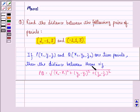then the distance between them, that is PQ is given by square root of x2 minus x1 the whole square, plus y2 minus y1 the whole square, plus z2 minus z1 the whole square.